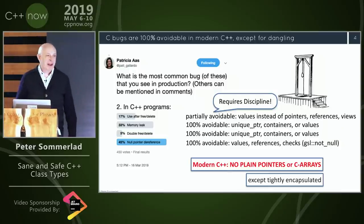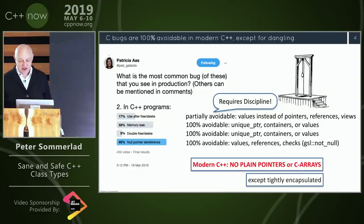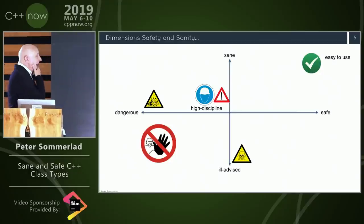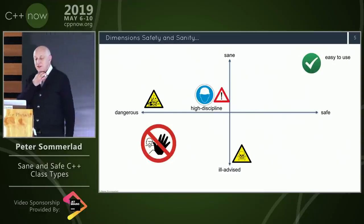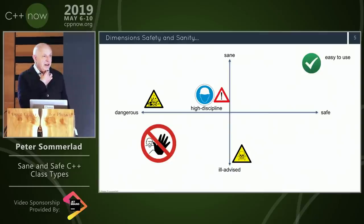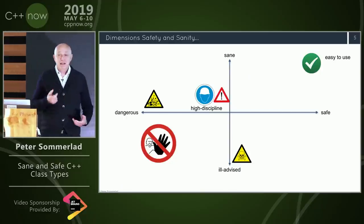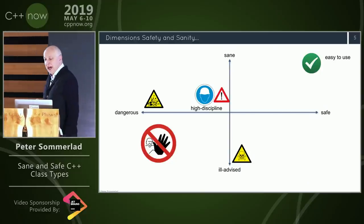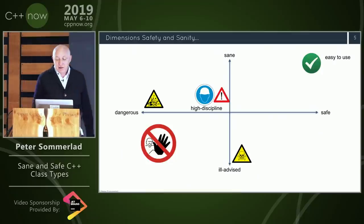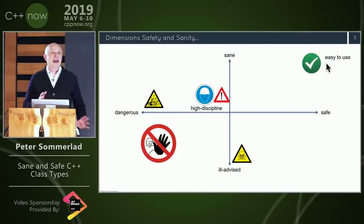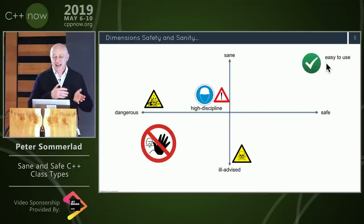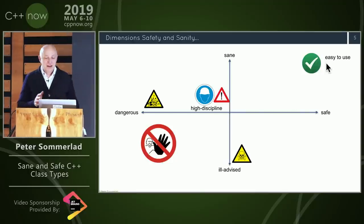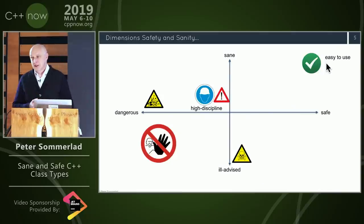I work with people in the automotive industry to write guidelines for modern C++ for safety-critical code. There's a sane and safe part that's easy to use — nothing can go wrong. The language mechanics support that. Easy to use, completely safe, maybe except for resource exhaustion on a very tiny system.